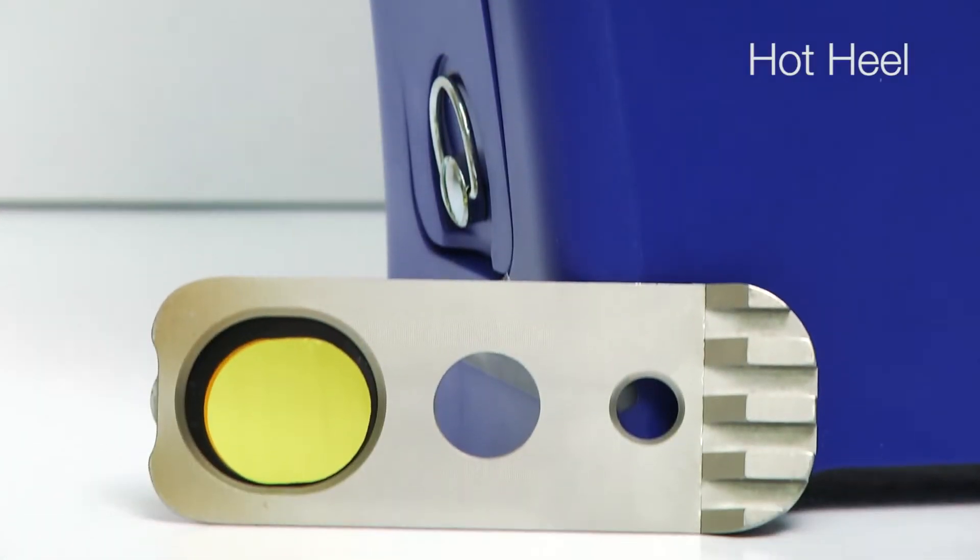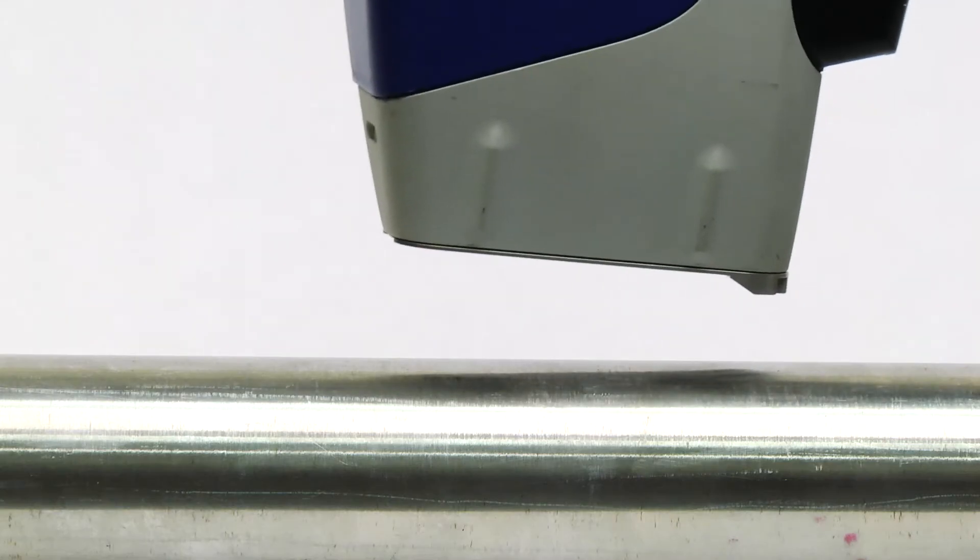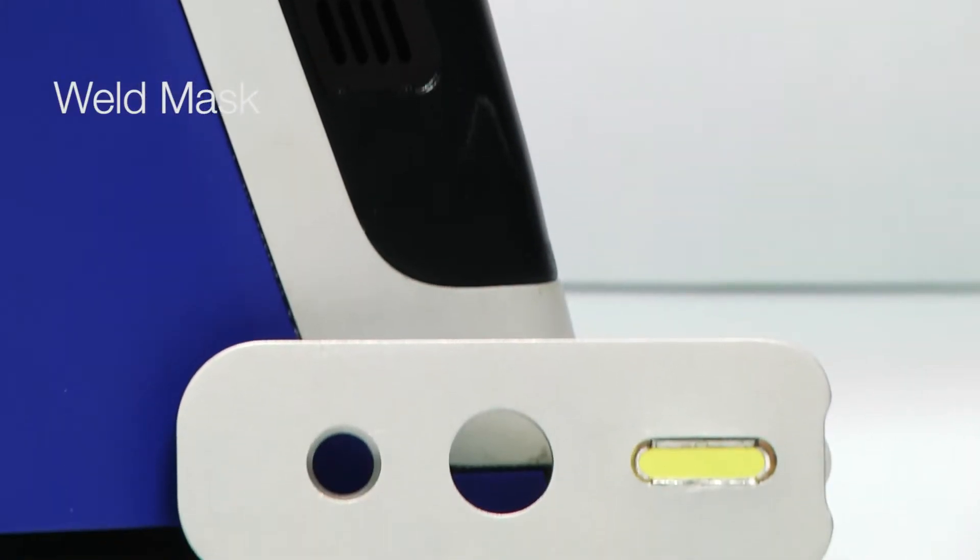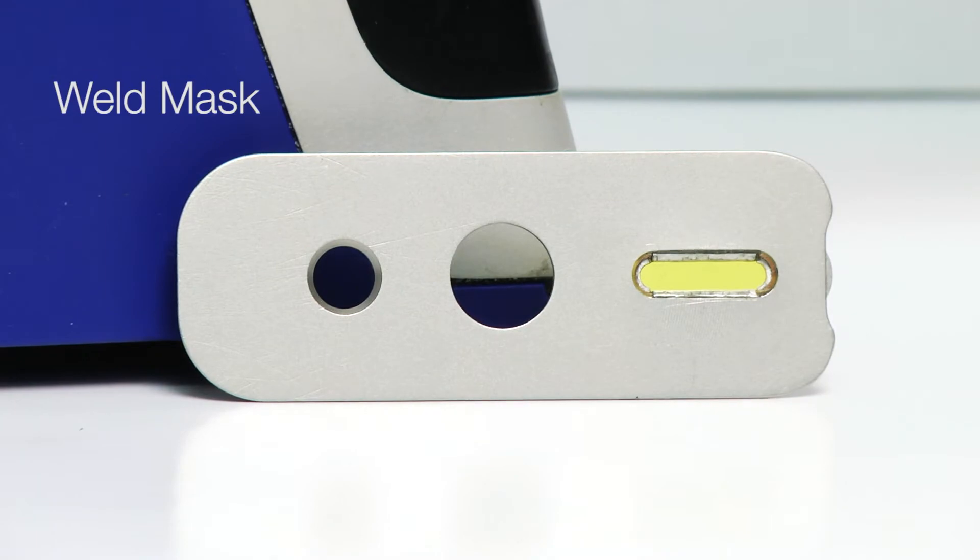The hot heel is used to maintain a gap between the window and sample to minimize heat transfer when testing hot objects. And the weld mask is used to focus on a narrow strip of material, like a weld.